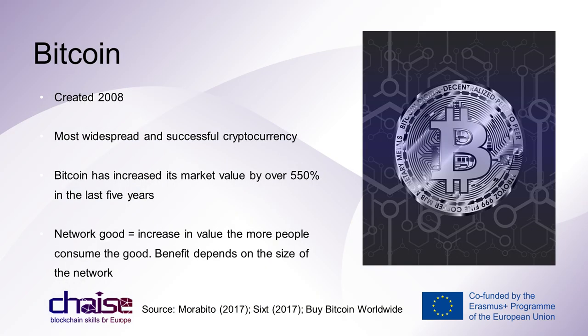The Bitcoin blockchain was created in 2008. Its currency, also called Bitcoin, is still the most widespread and successful cryptocurrency. It was traded on a crypto exchange platform in July 2010 with an equivalent value of $0.06 per Bitcoin and a market capital of $277,000. Two years later it reached $25 per Bitcoin. In 2013, the currency reached $1,242 and a market capitalization of around $13.5 billion. By the summer of 2022, the value reached around $8,150, and later over $20,000 per Bitcoin — an increase of over 550% in the last five years.